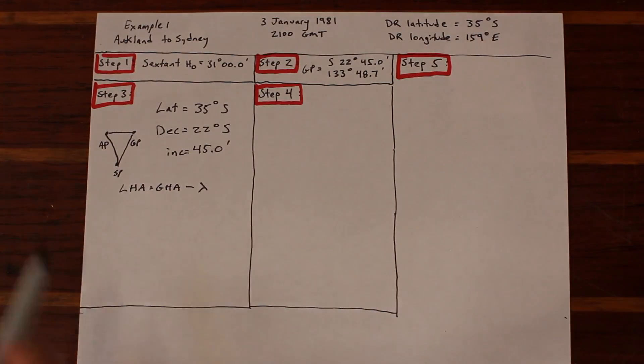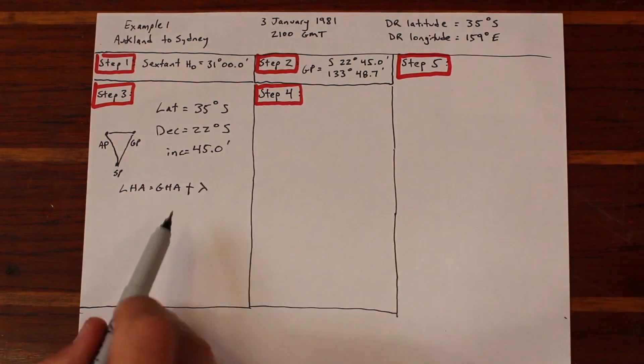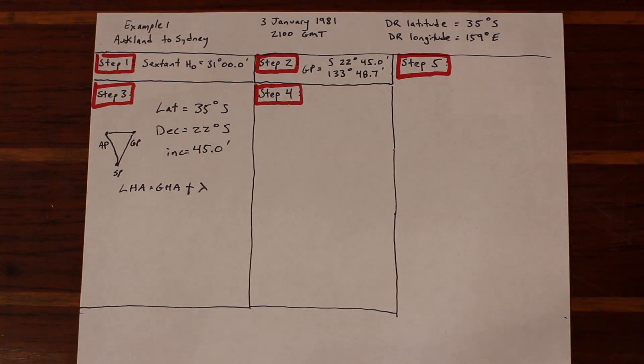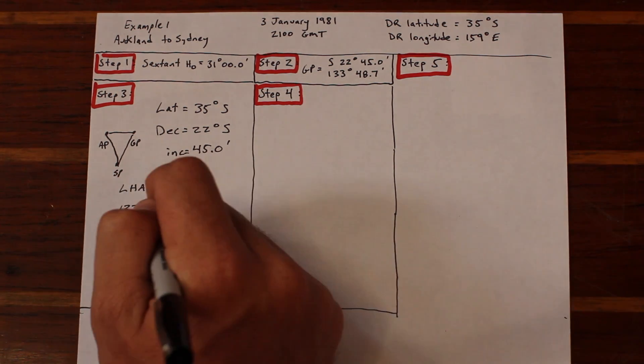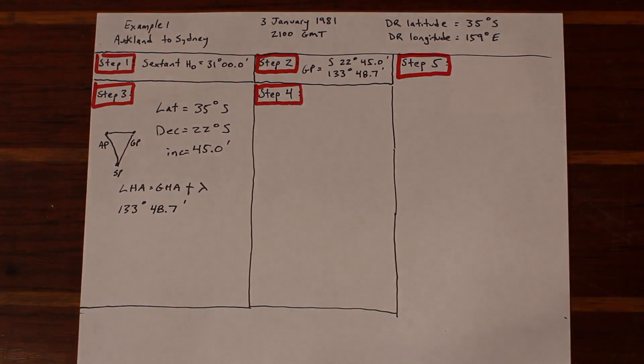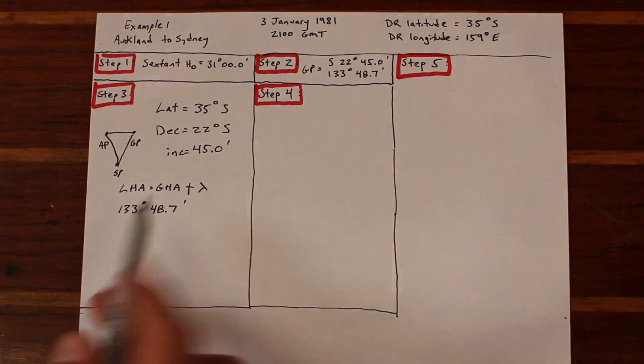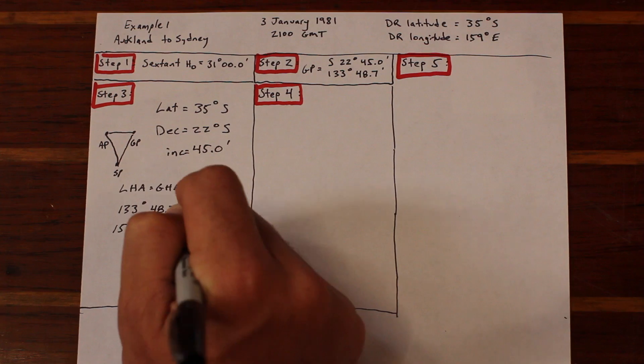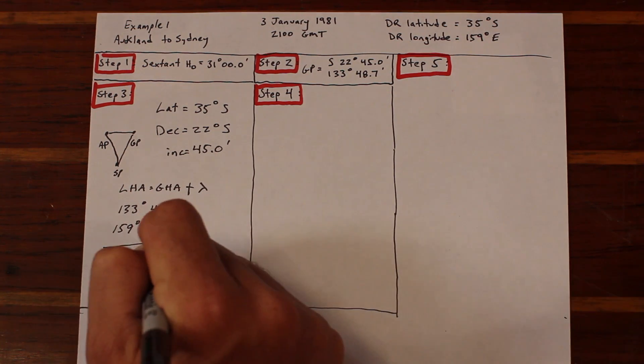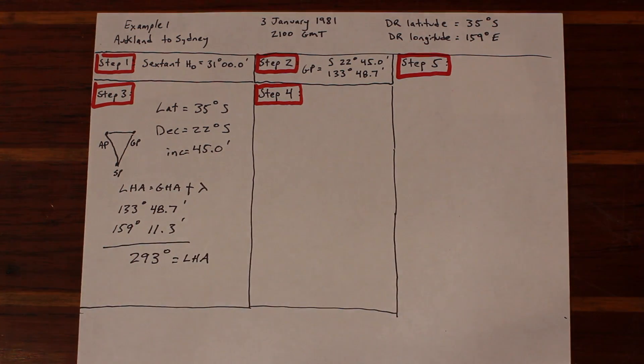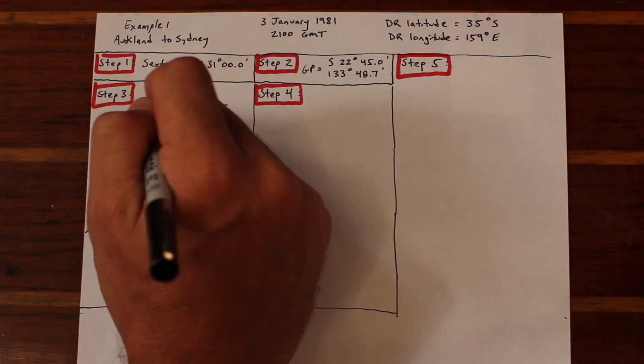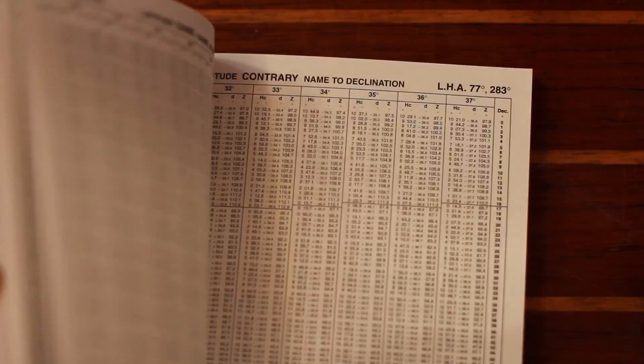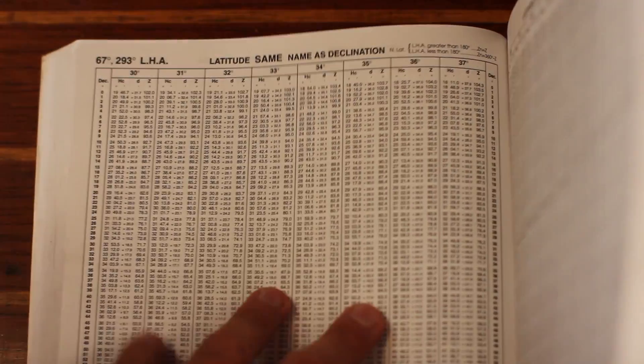Our declination is not a whole number so we'll use 22 whole degrees and an increment of 45 minutes that we'll correct for later. We're in the eastern hemisphere so LHA is GHA plus longitude. But we want it to work out to a whole number and the assumed position is arbitrary. So let's pick 159 degrees and 11.3 minutes. A common error in the eastern hemisphere is to forget that the two minute portions of the math add up to a whole degree and that needs to be accounted for. I've probably missed my LHA by one degree a thousand times, so watch out for that.